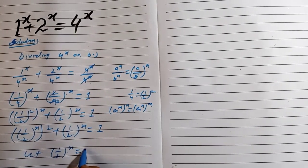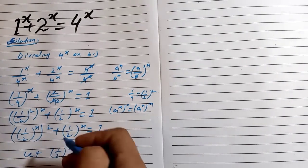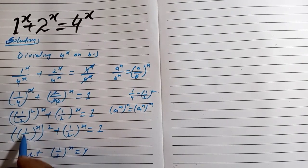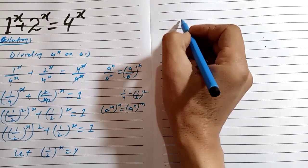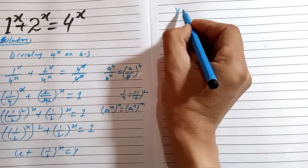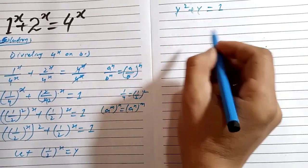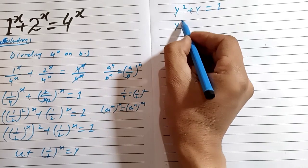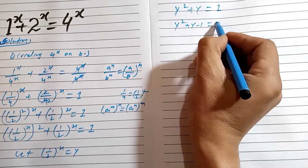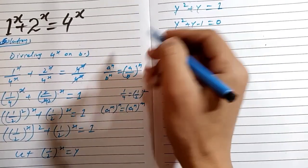We let Y = (1/2)^x. Substituting Y in place of (1/2)^x, we get Y² plus Y equals 1. Moving 1 to the left by subtracting 1 from both sides gives us Y² + Y - 1 = 0. This is a quadratic equation, so we use the quadratic formula to find Y.